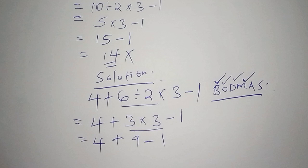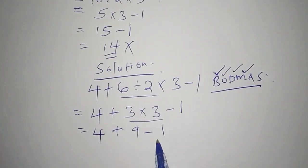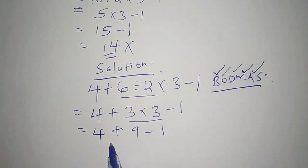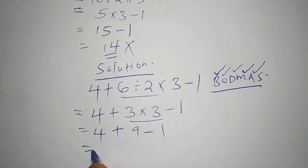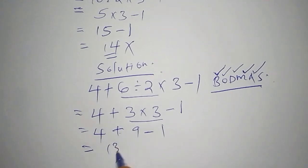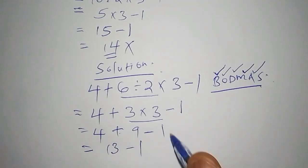So we are remaining with few steps like two steps. Then the other one we shall now work out the addition because A stands for addition. So here we shall say that 4 plus 9 is 13, then we shall have 13 subtract from this 1 here.